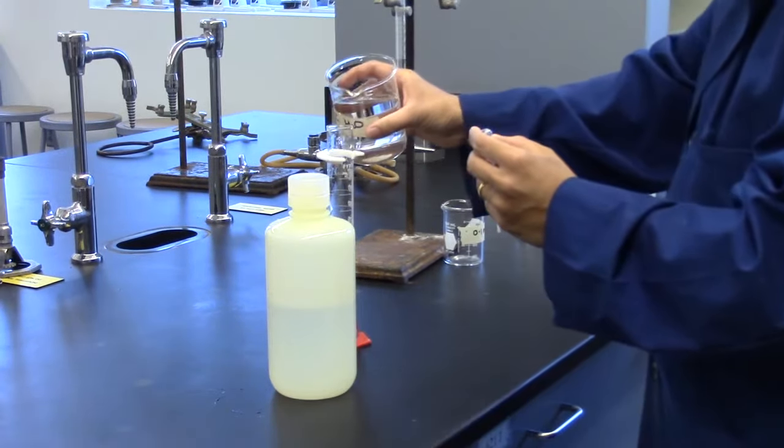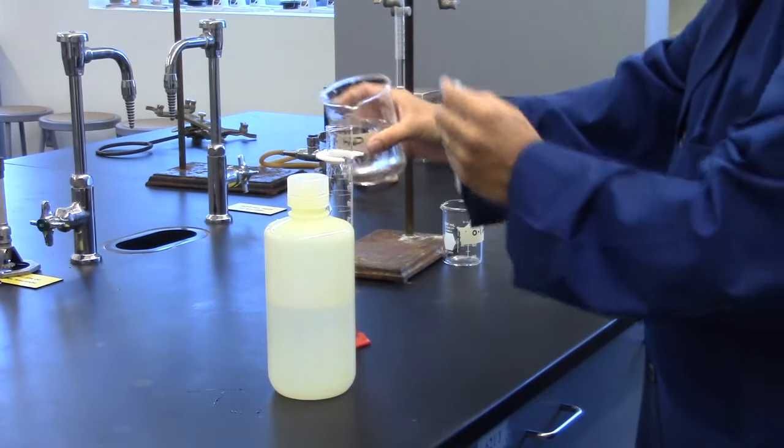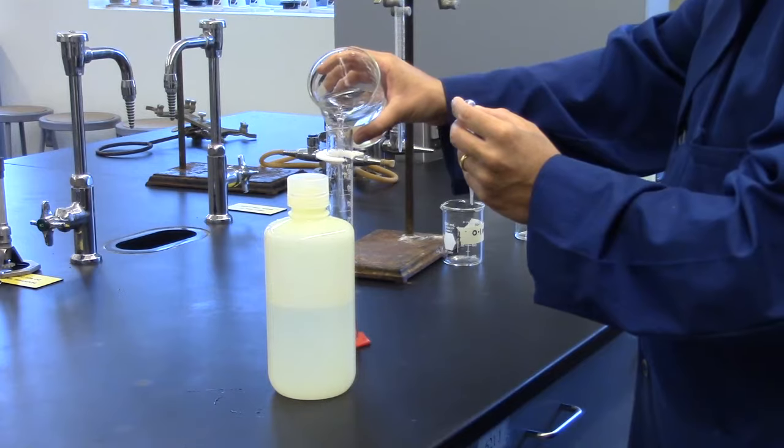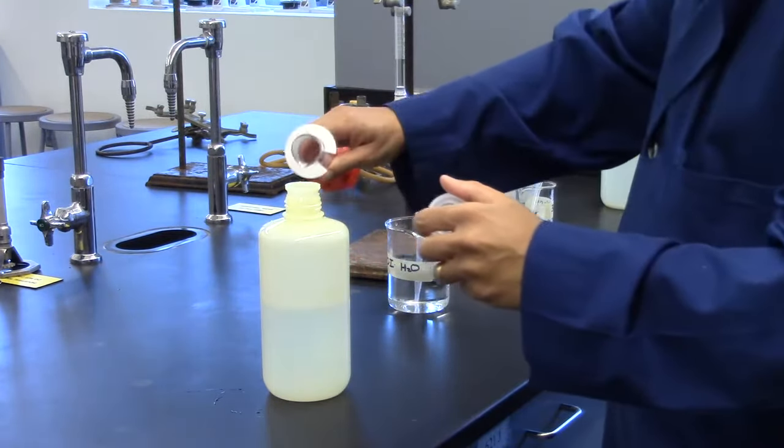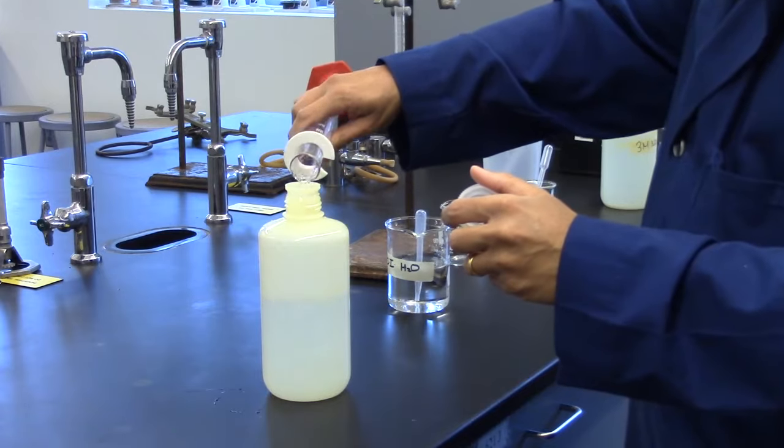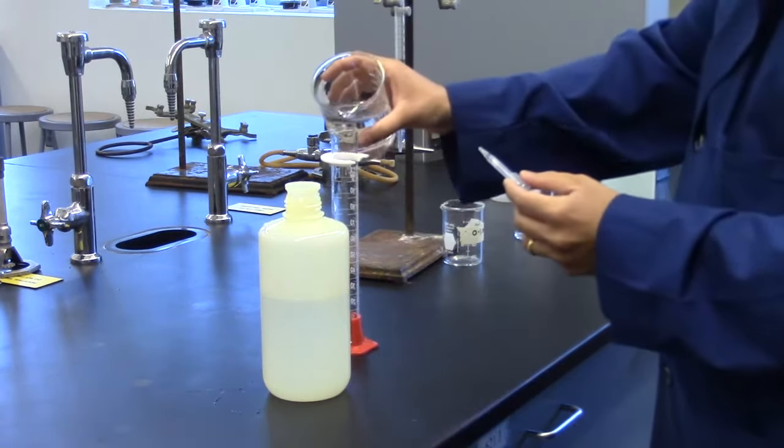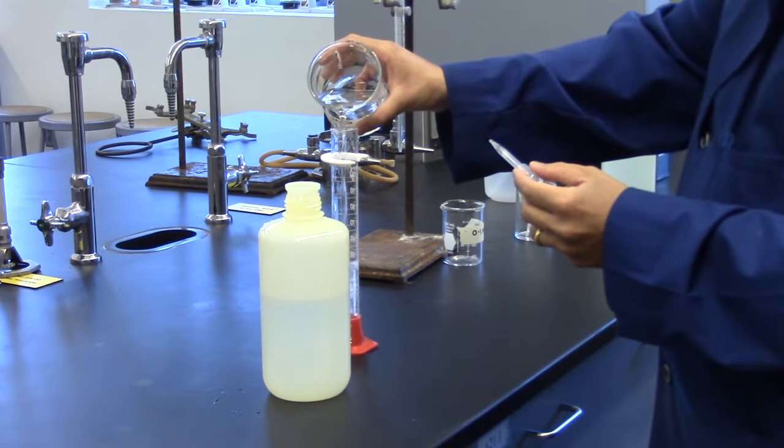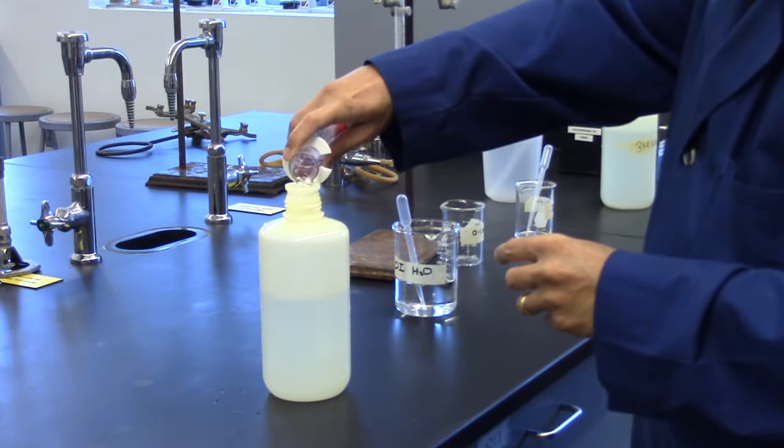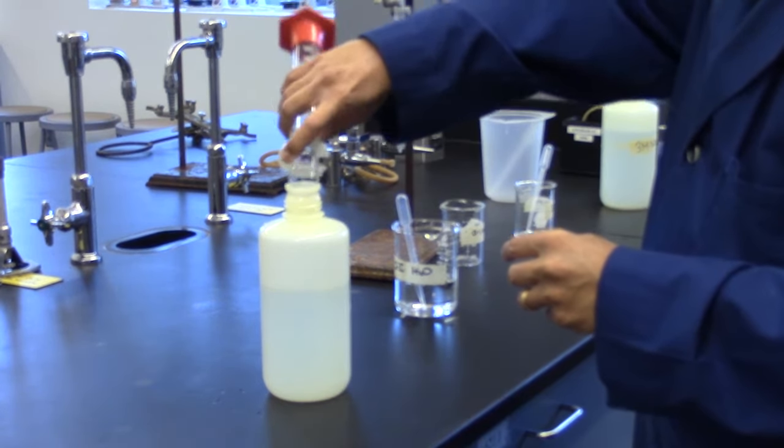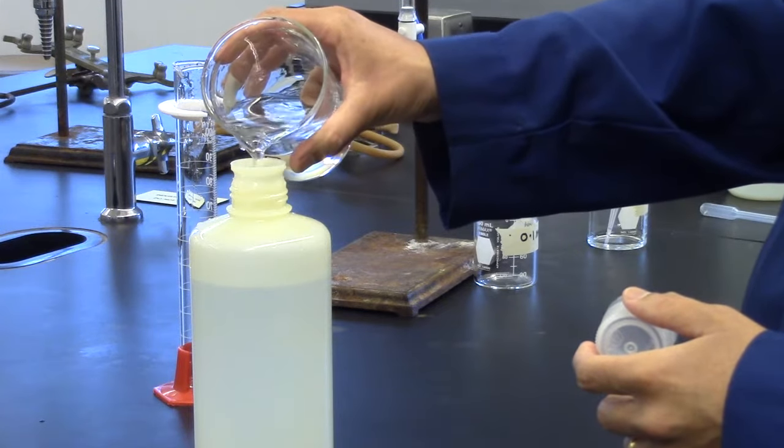Next, fill graduated cylinder with distilled water and pour into the 1 liter bottle and repeat twice. Now, add enough distilled water to fill to the top.